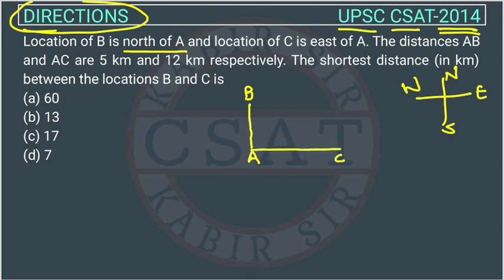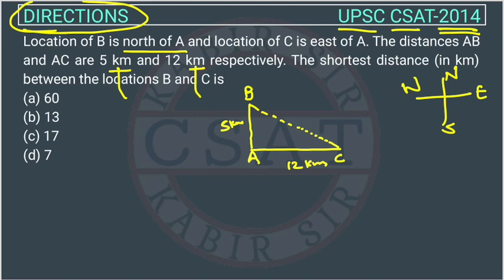The distance of AB and AC are given — AB is 5 kilometers and AC is 12 kilometers. Both are in kilometers, so there is no problem there. The shortest distance between the location B and C will be this dotted line I am drawing.